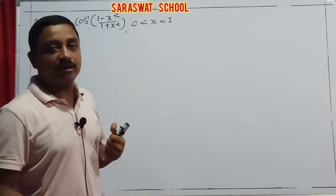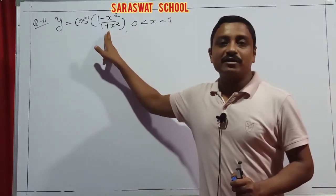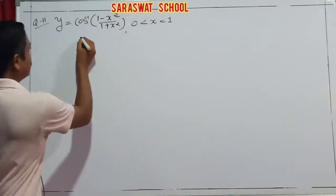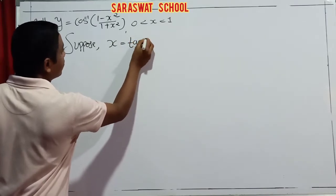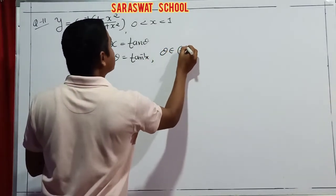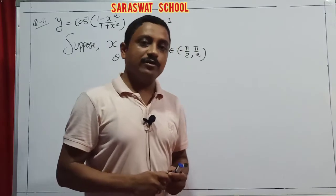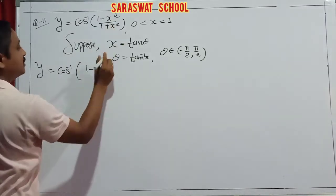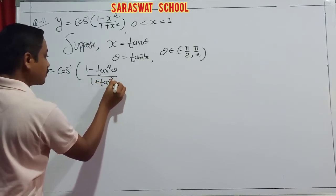Students, I think you know that (1-x²)/(1+x²) is the cos 2θ formula. If suggestion x = tan θ, then I start the sum. Suppose x = tan θ, so θ = tan⁻¹x, and θ belongs to range (-π/2, π/2). So y = cos⁻¹((1-tan²θ)/(1+tan²θ)). And (1-tan²θ)/(1+tan²θ) is the cos 2θ formula.